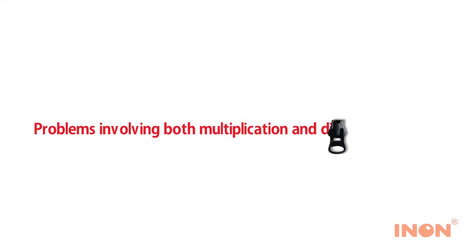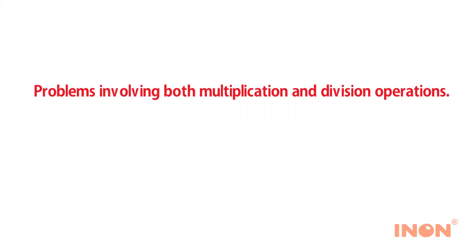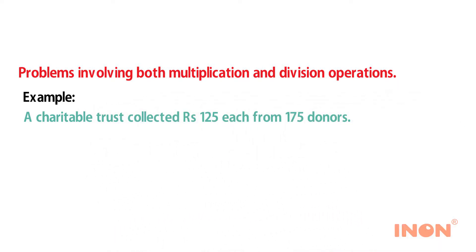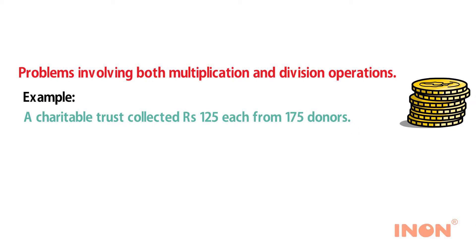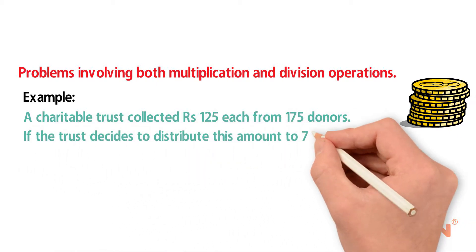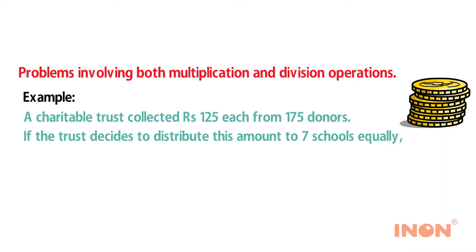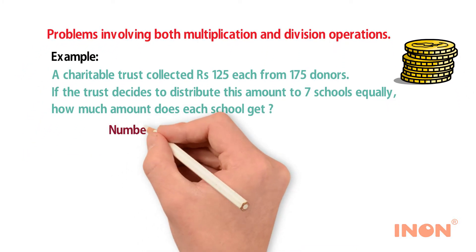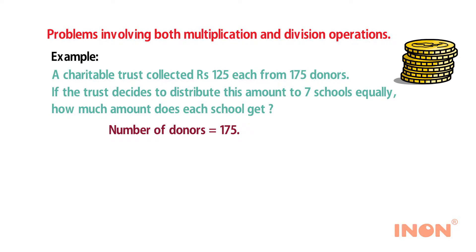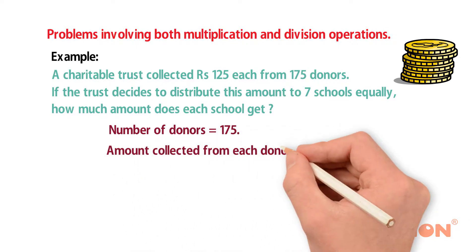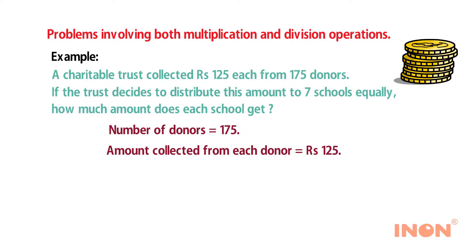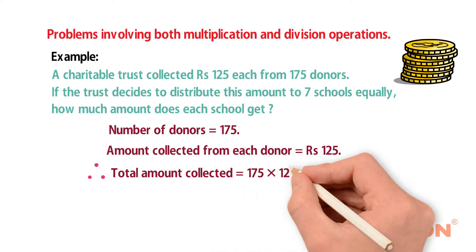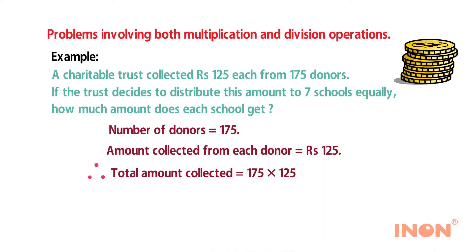Problems involving both multiplication and division operations. Example: A charitable trust collected ₹125 each from 175 donors. Number of donors equals 175, amount collected from each donor equals ₹125. Therefore, total amount collected equals 175 into 125, which equals ₹21,875.